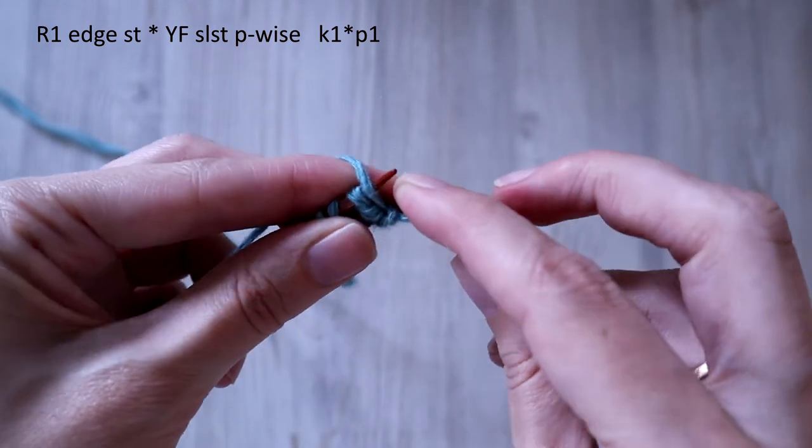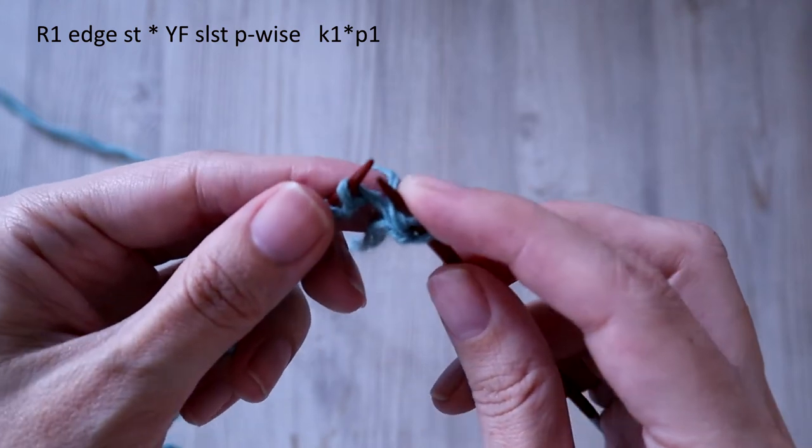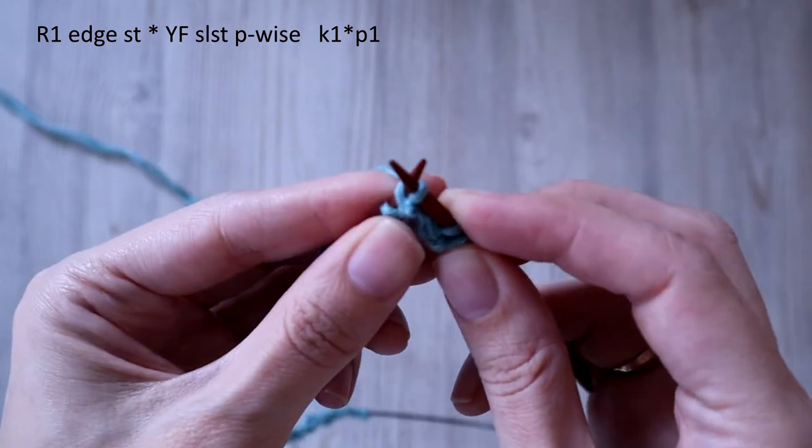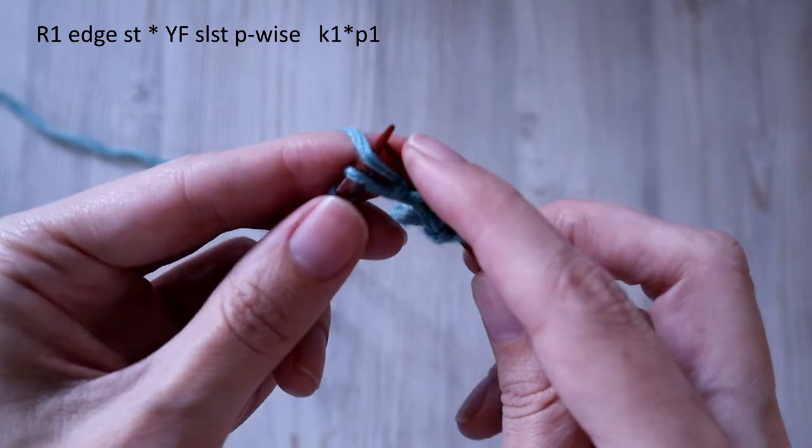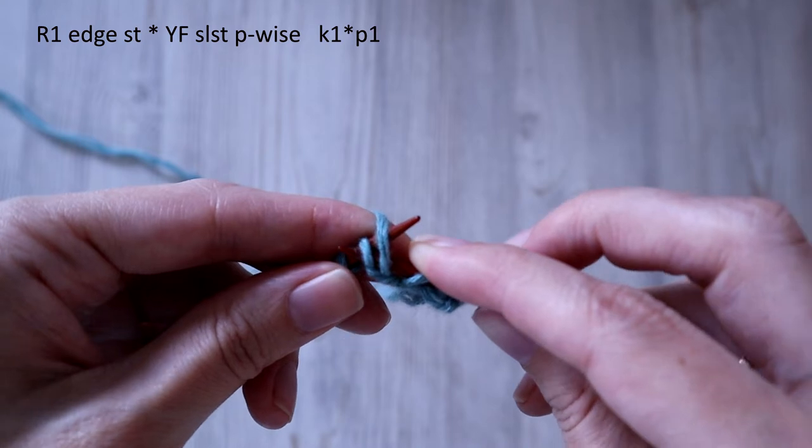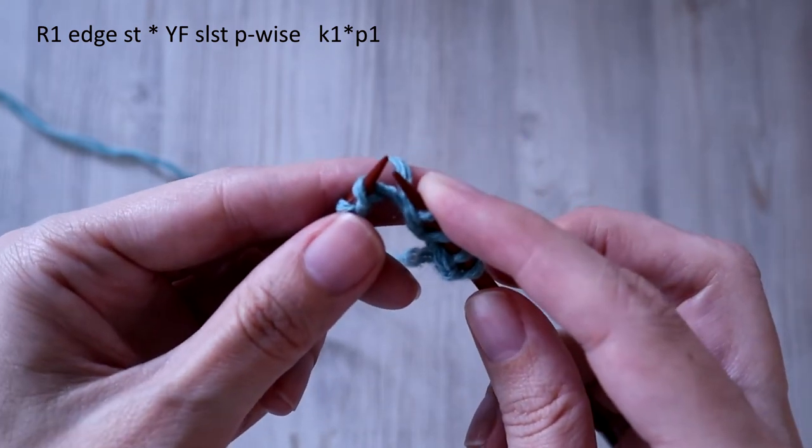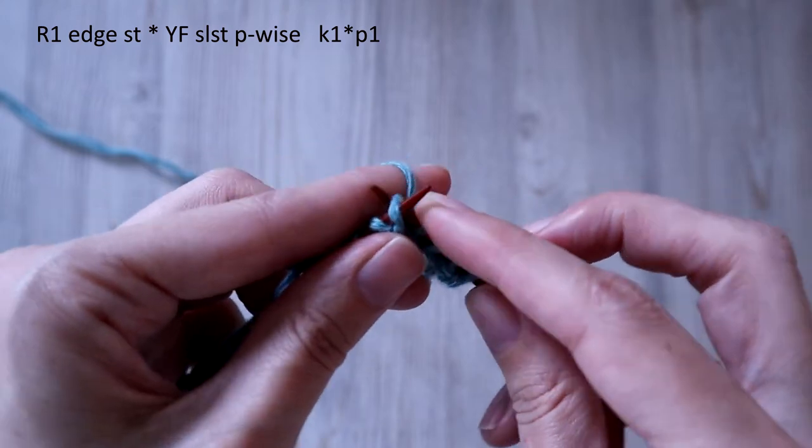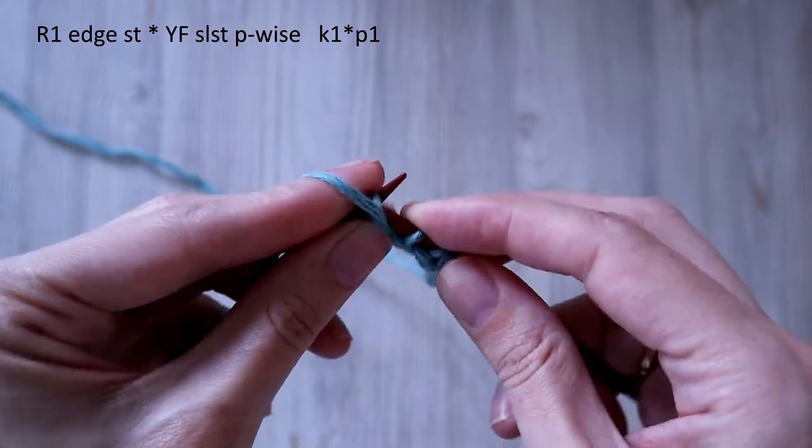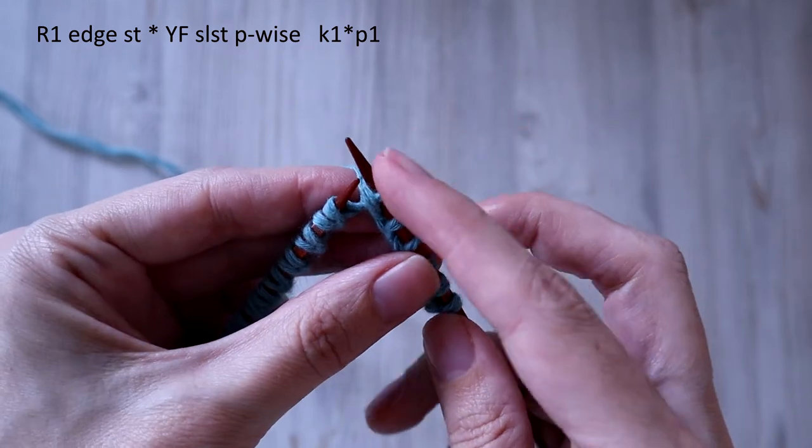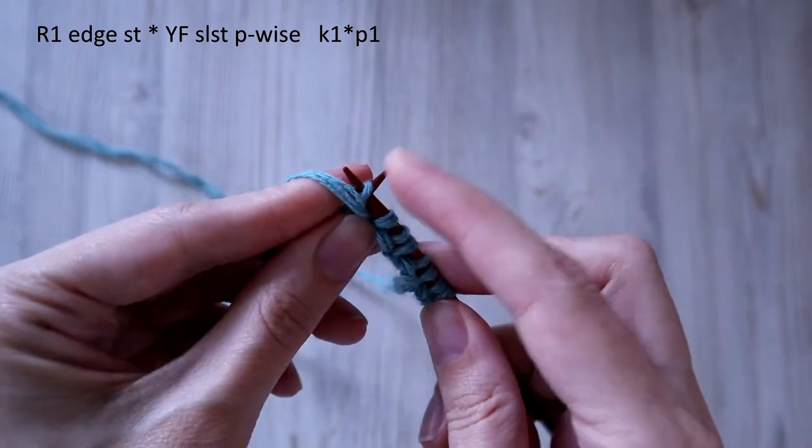Next, yarn forward and slip stitch purlwise. And knit one. Knit one and knit one. And yarn forward, slip stitch purlwise one, and knit one row. That's what's important.